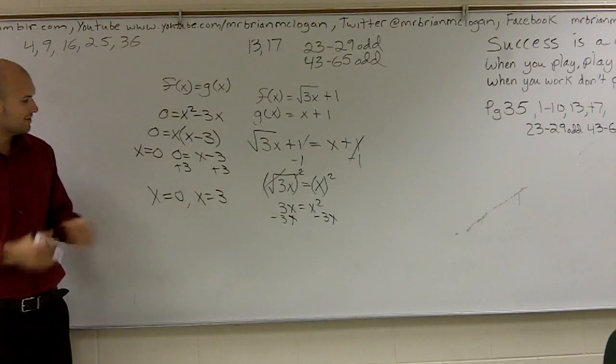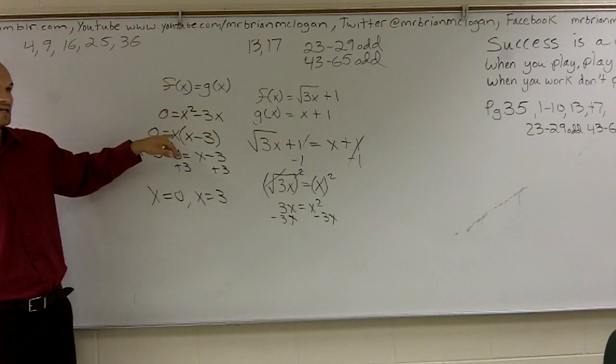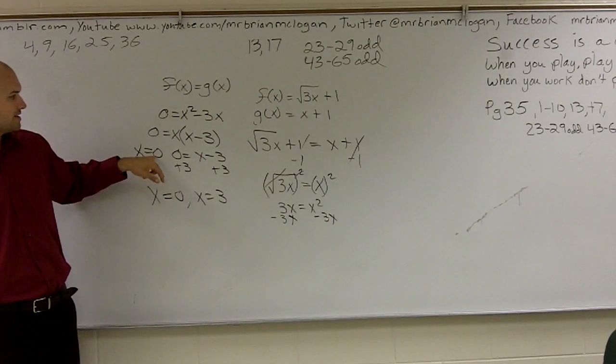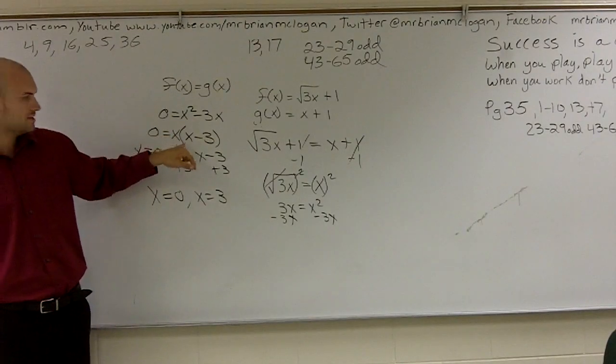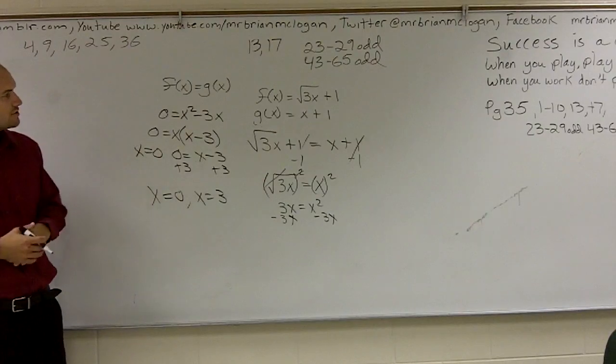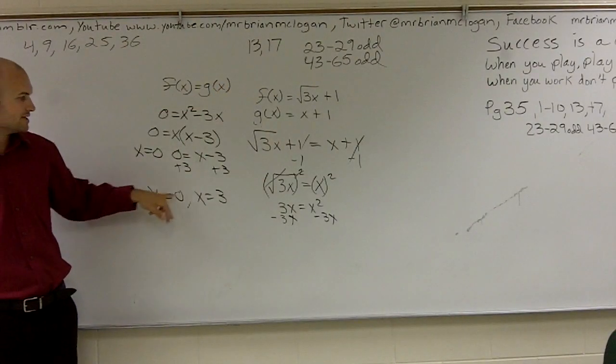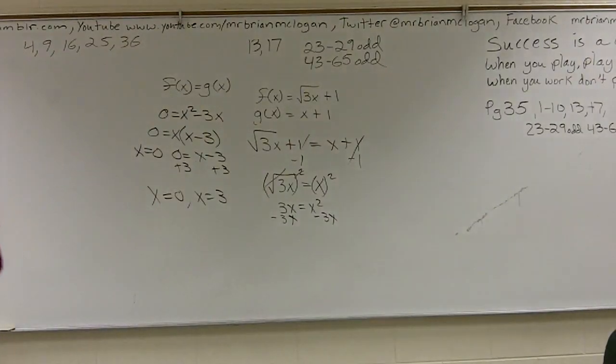And pretty much what we're showing you is, you know, if you plugged in 3 in there, 3 minus 3 would be 0. 0 times 3 would be 0 again. Or if you plugged in 0 for x, 0 times negative 3 would be 0 again. So therefore your two solutions, when f of x equals g of x, is 0 and 3. Make sense?